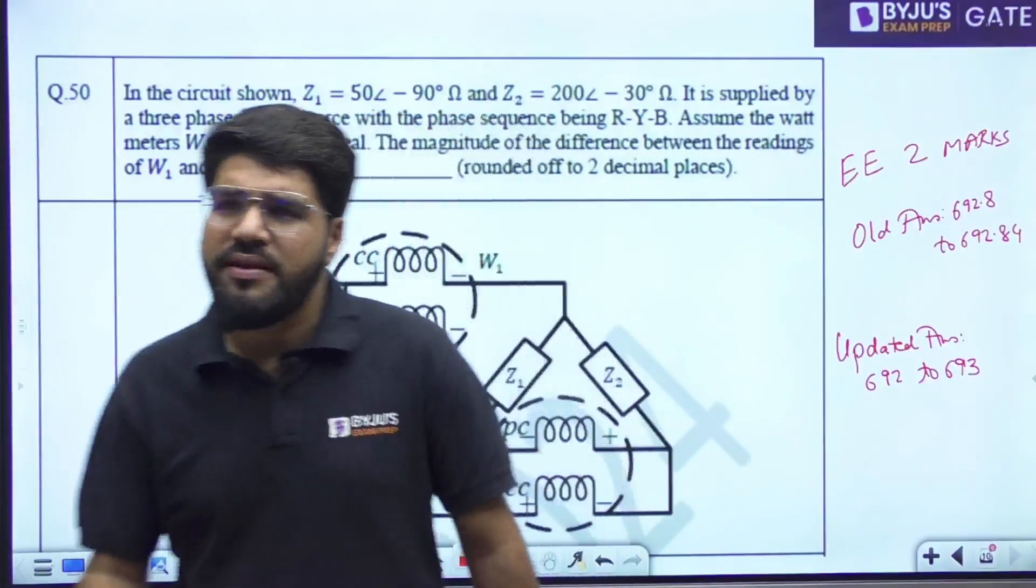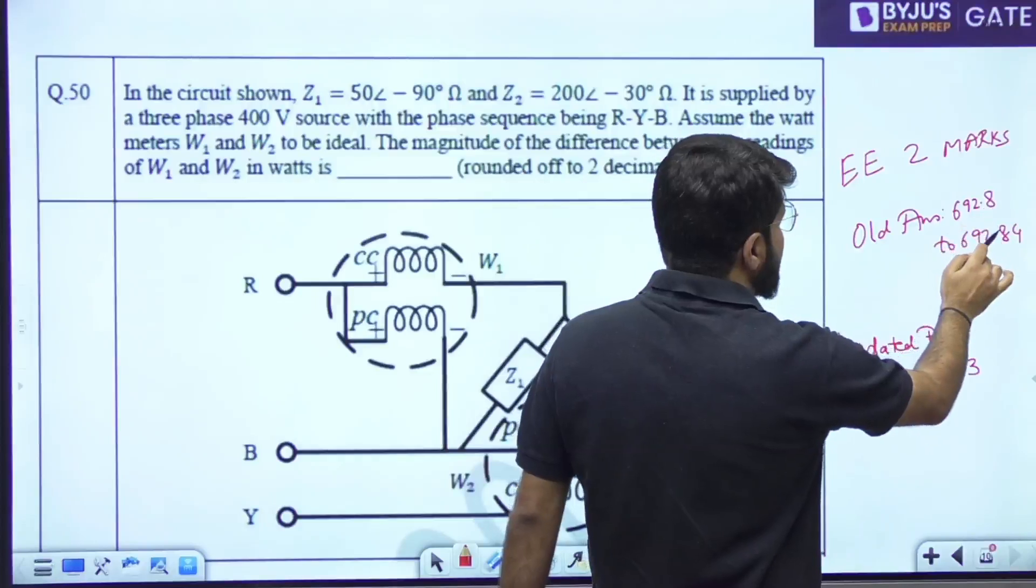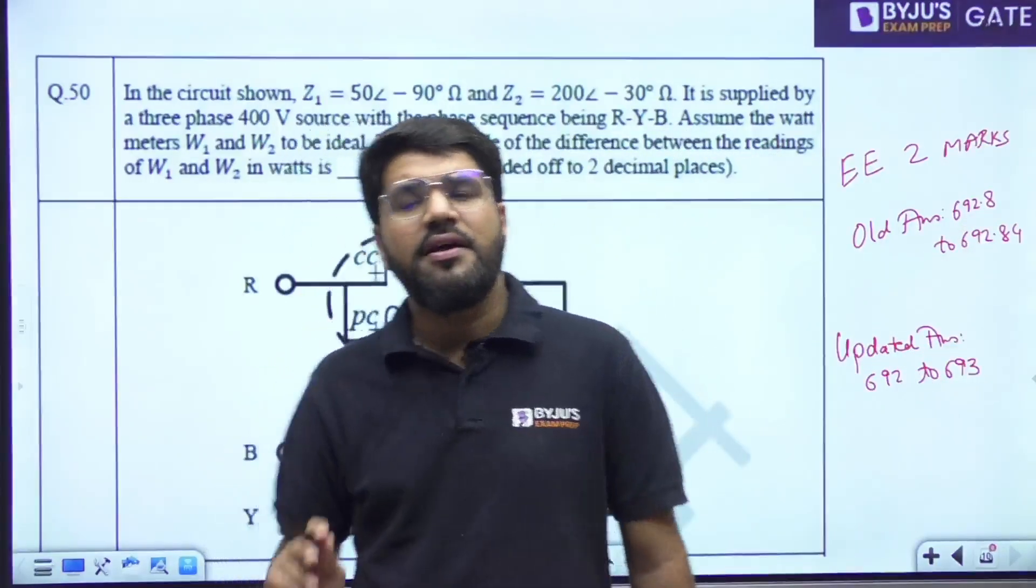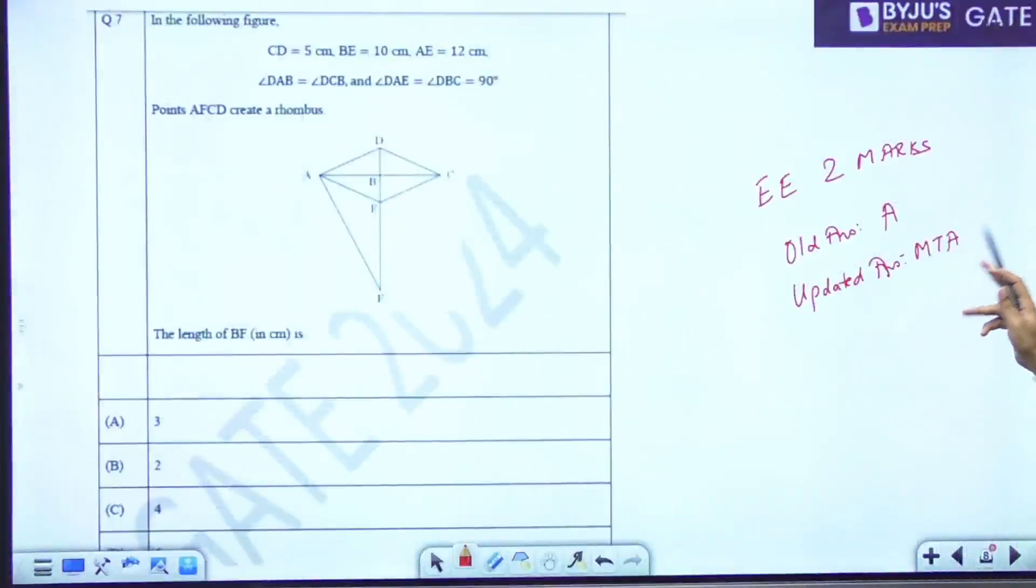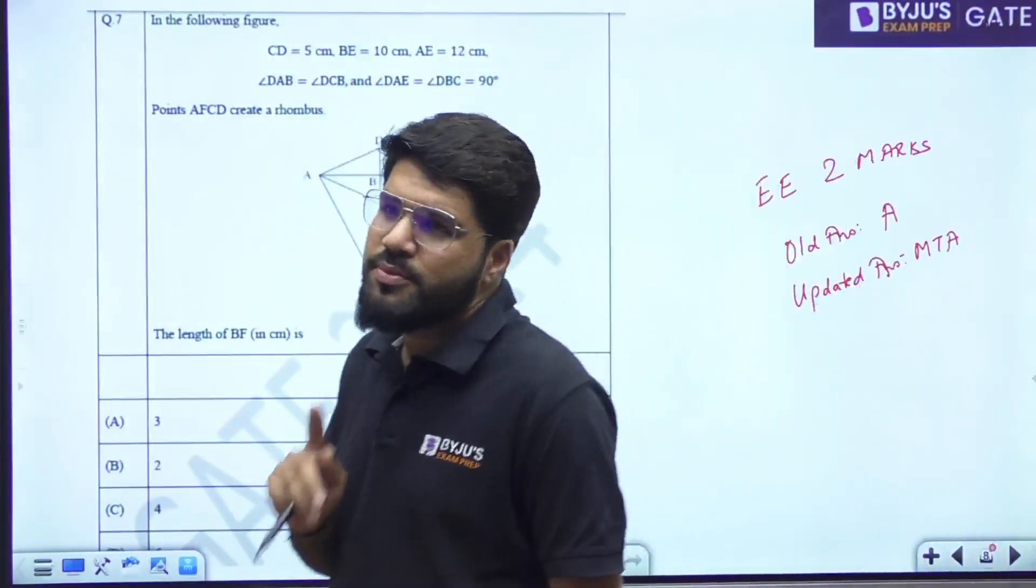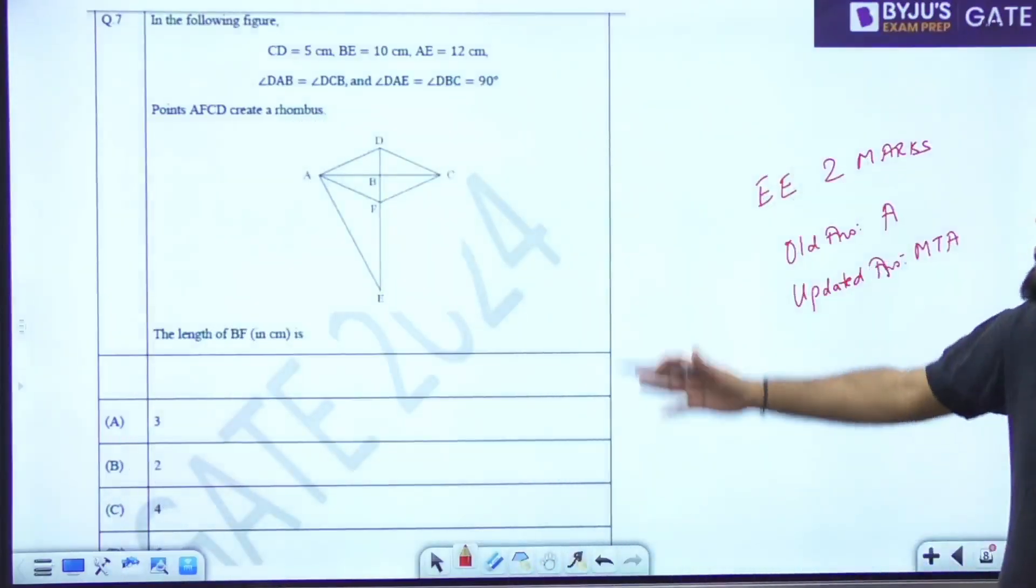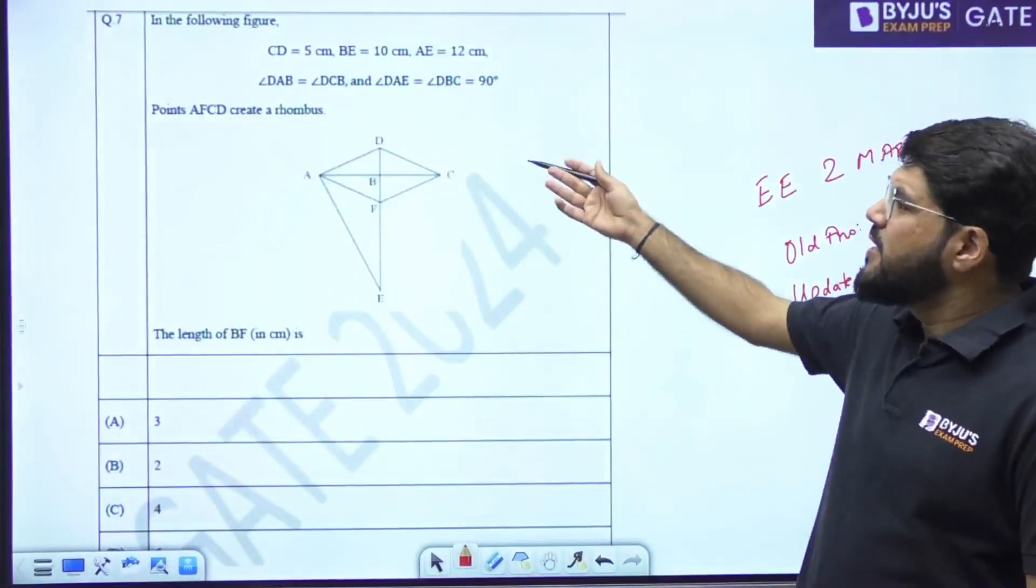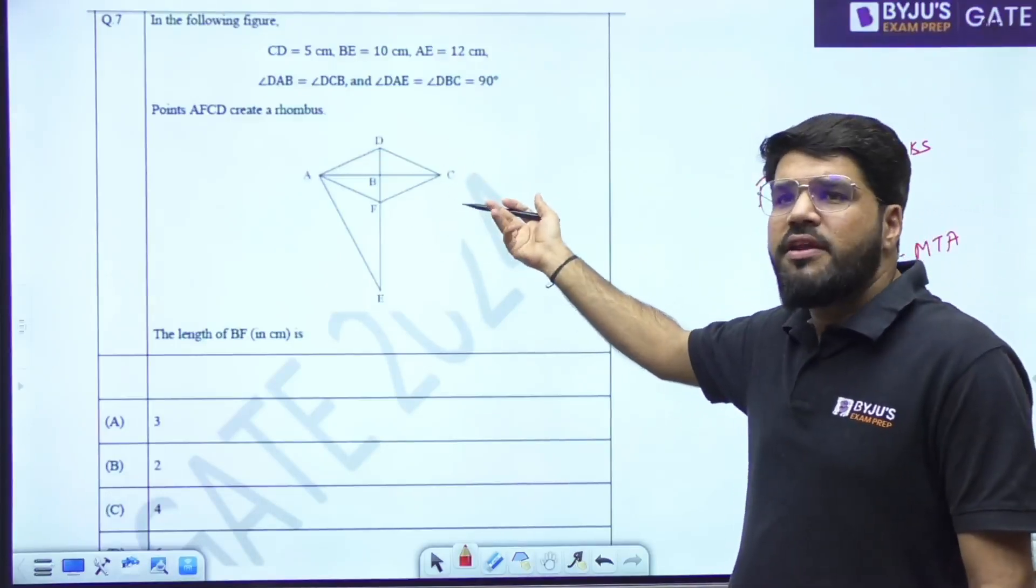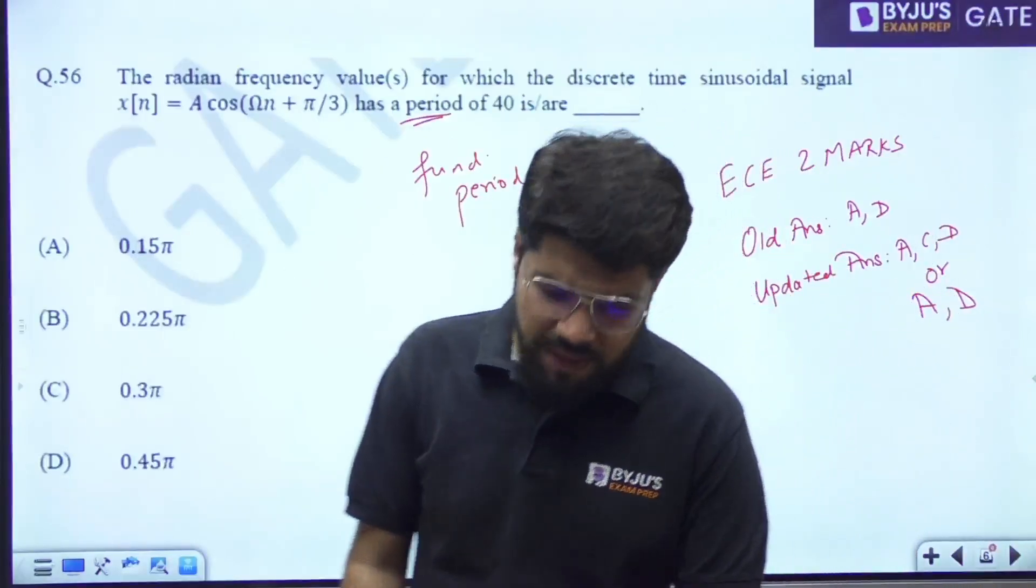Next one in the electrical here is coming up, question from power system. The range has been increased. It was a very small range earlier - 692.8 to 692.84. Now it is 692 to 693. These are the minor changes in electrical. Two MTA coming up. Again, three marks of MTA going to definitely increase the cutoff as well as the topper marks, everything. But again, time waste. Somebody maybe did not get time to solve it. Then he gets free two marks. It's a two mark question, so yeah, these are the major updates about the paper.